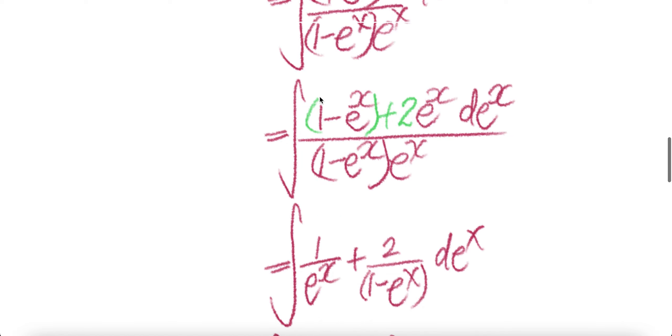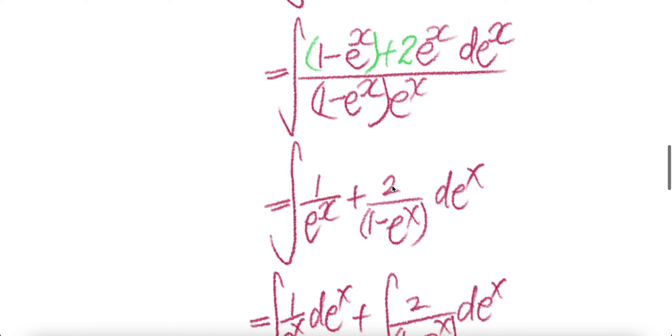Now notice this: there are two terms, one term followed by the second term. The first term, 1 minus e to the power x cancel, you get 1 over e to the power x. Second term, e to the power x cancel, you get 2 over 1 minus e to the power x.